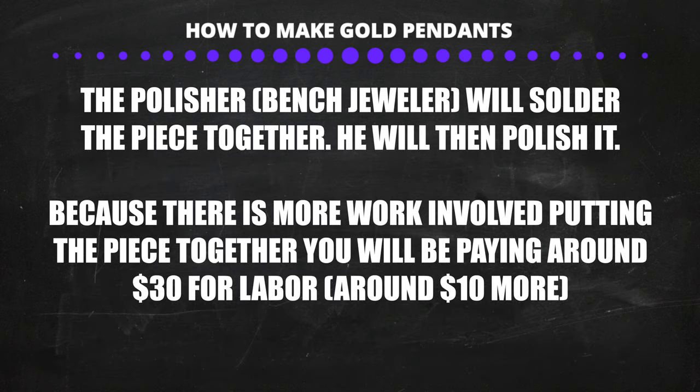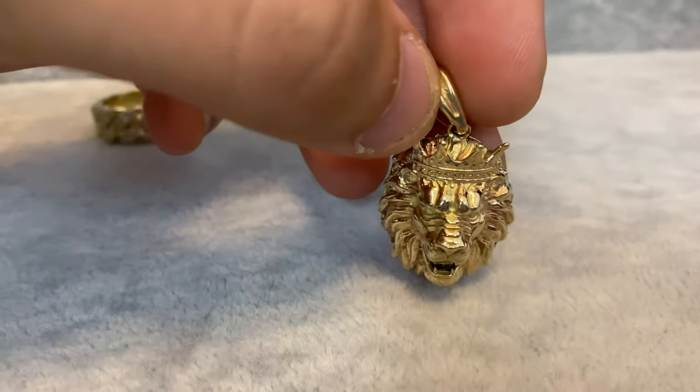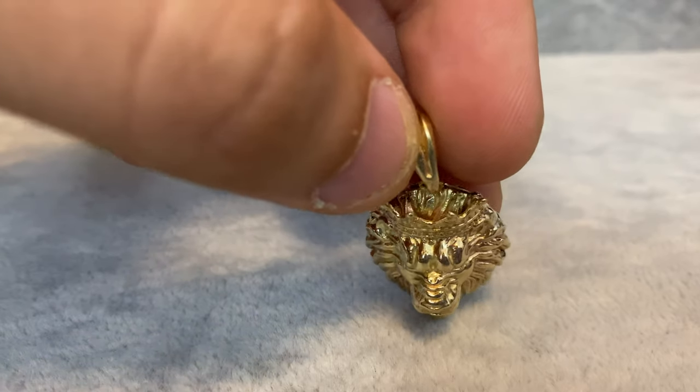The next step is to take our piece to the polisher. He's going to file everything, sand everything down, polish everything, and also weld everything together. Usually we'd pay around $20 to polish this type of piece, but because there's more work — you have to solder everything together — we're going to pay around $30. This is what our piece is going to look like once it's finished.